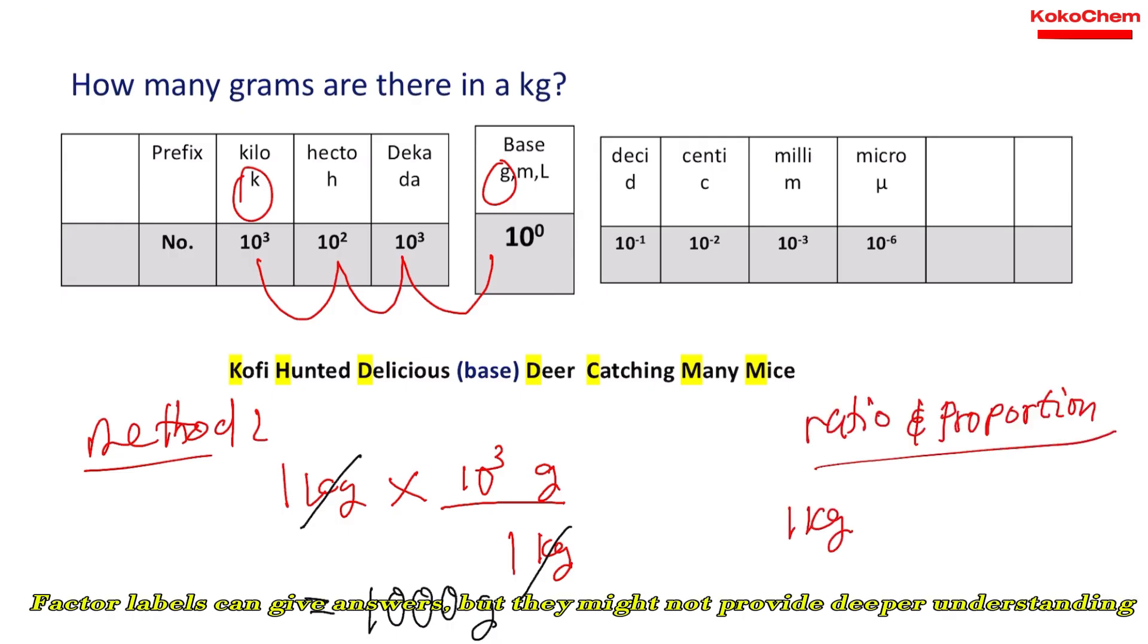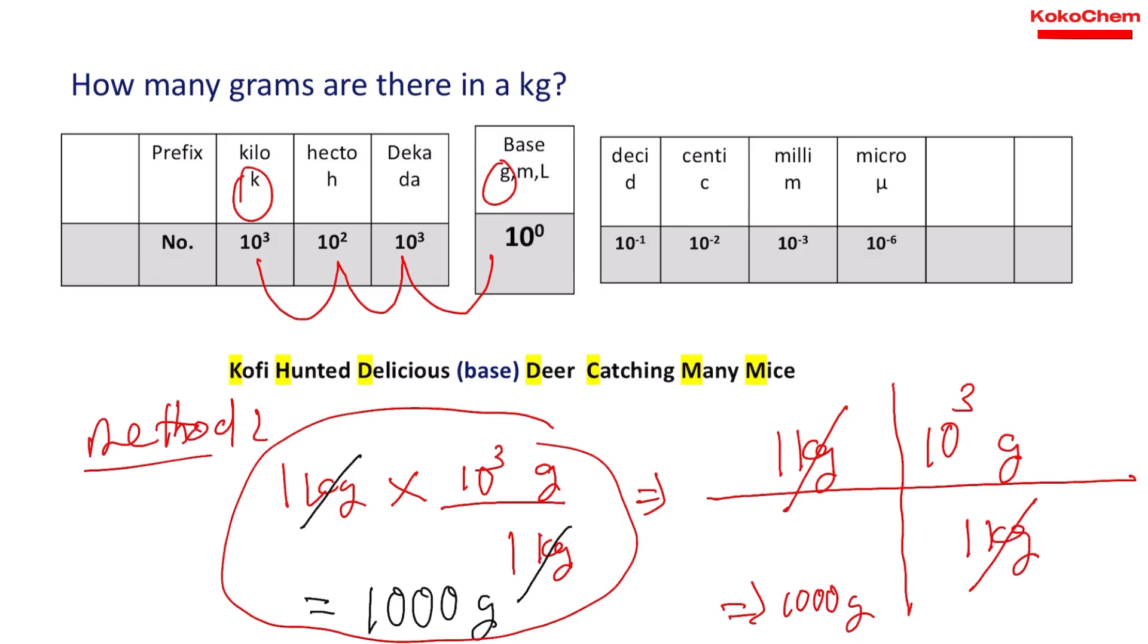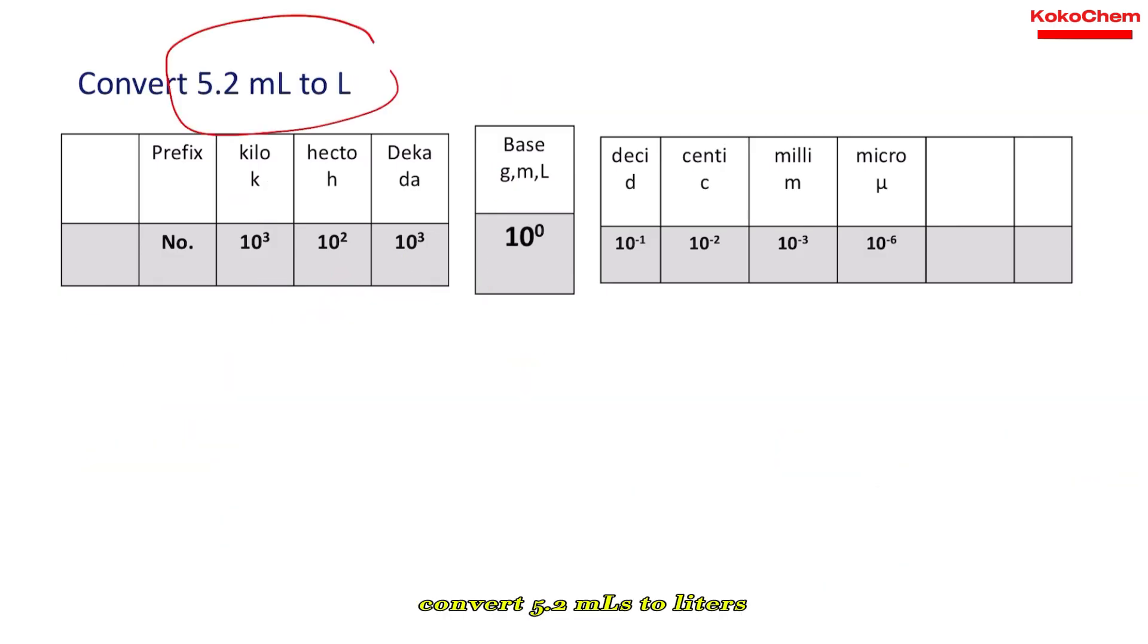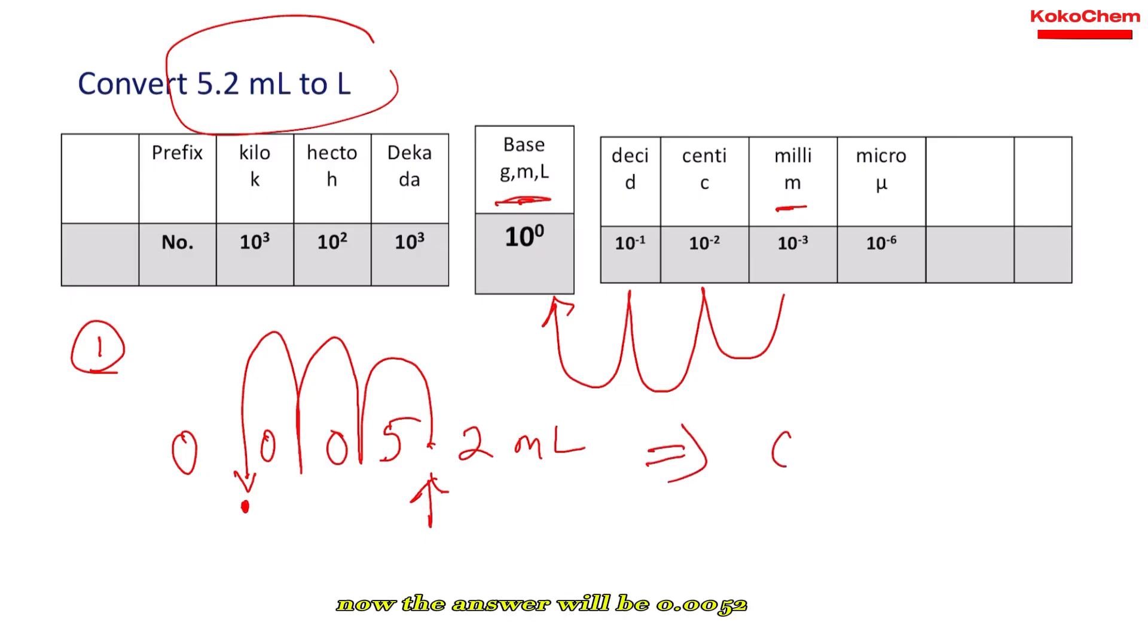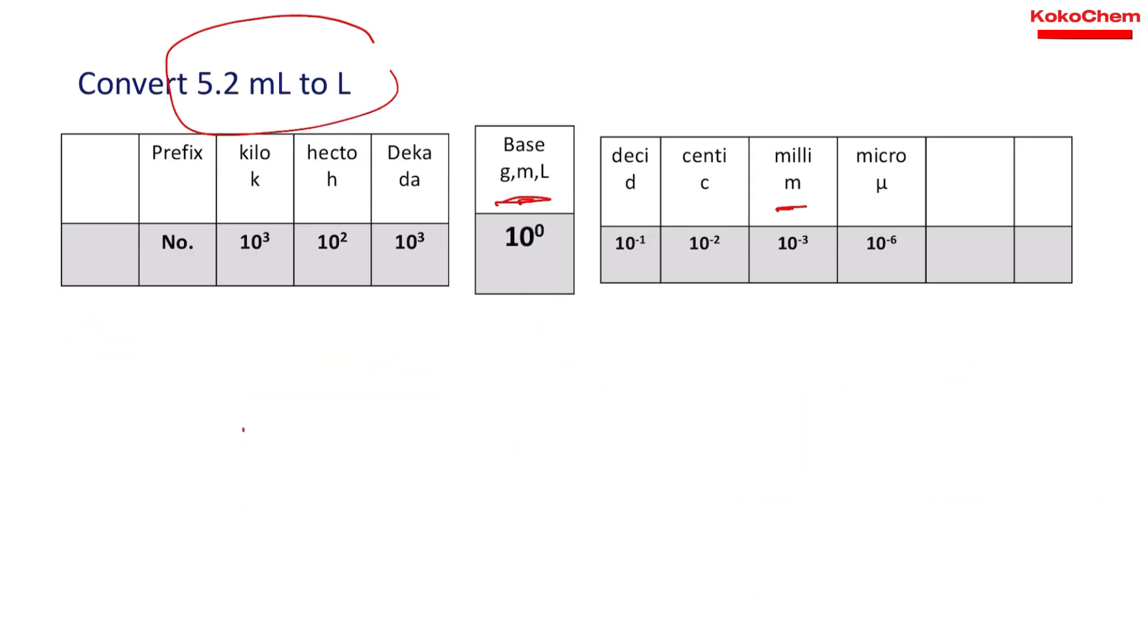Another example: convert 5.2 milliliters to liters. First, using method one, the decimal point moves three times towards the left: one, two, three.